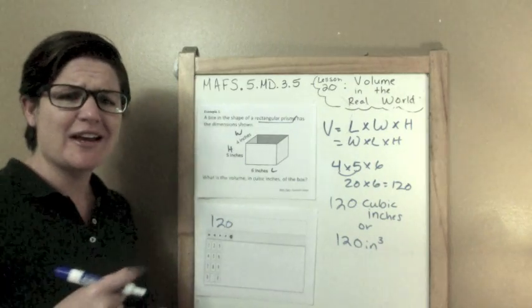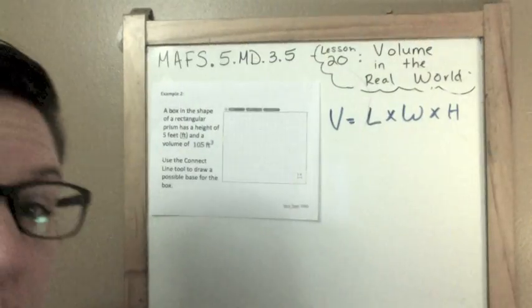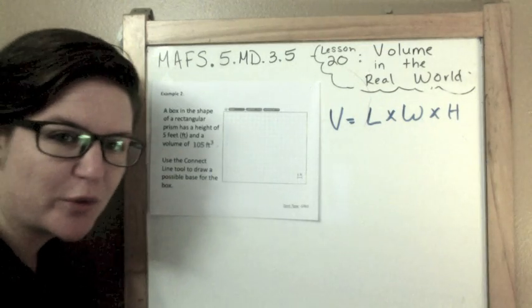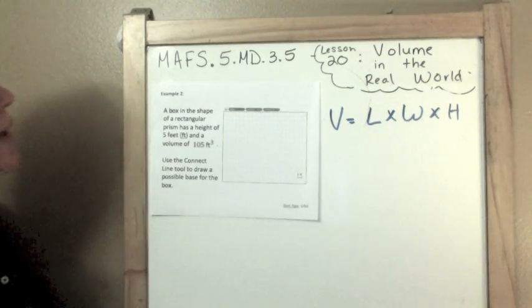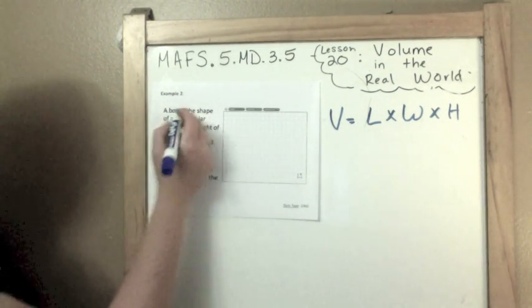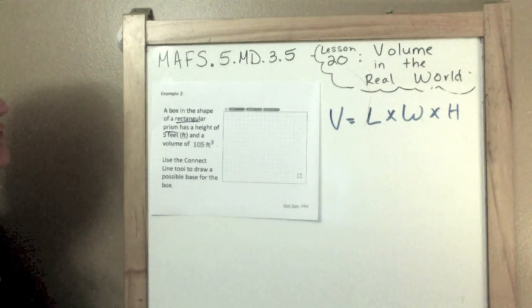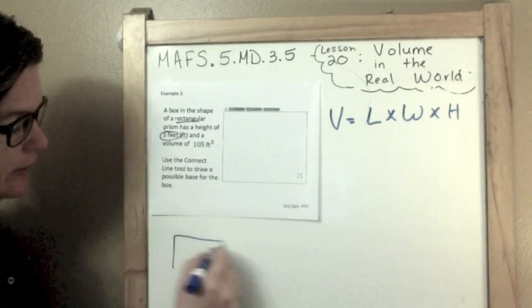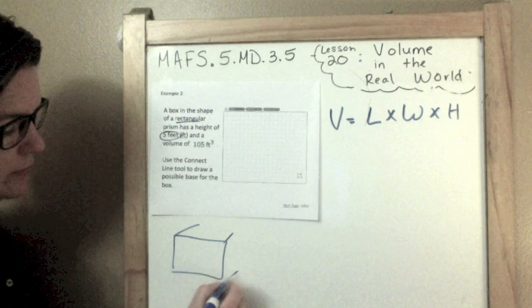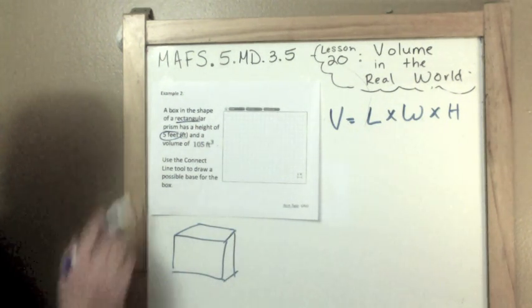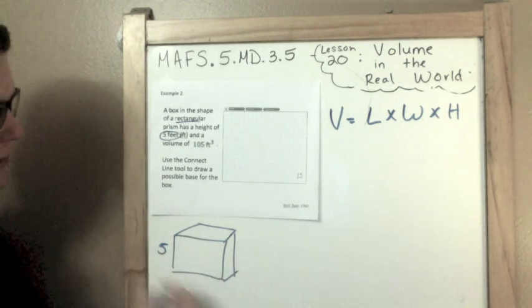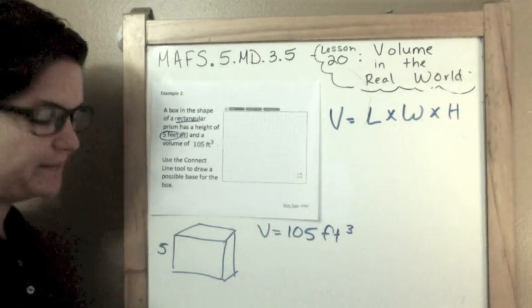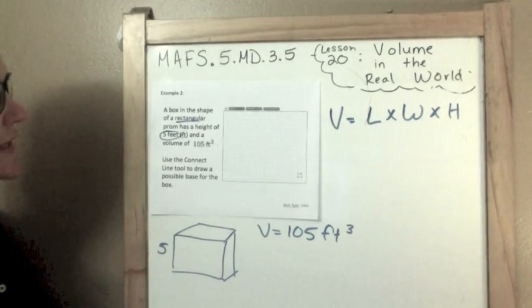Example 2 coming to a classroom or home near you. So, hi guys. It's me, right here. I moved this a little bit closer so you could see what I was doing. Because I have to work within the grid. A box in the shape of a rectangular prism has a height of 5 feet and a volume of 105 feet. So, I'm going to model that out here. It has a height of 5 feet and the entire volume equals 105 feet cubed or cubic feet. So, we need to find what the base would be.